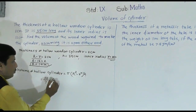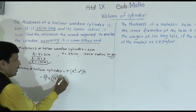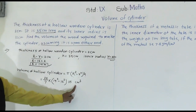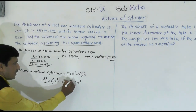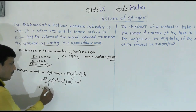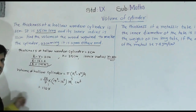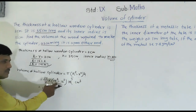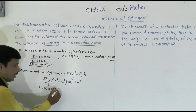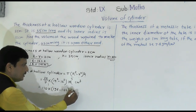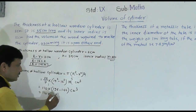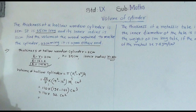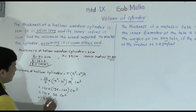Volume equals (22/7) × (14² − 12²) × 35 cubic centimeters. We simplify: 7 goes into 35 five times, giving 22 × 5 = 110. Using the difference of squares: 14² − 12² = (14+12)(14−12) = 26 × 2 = 52. So volume equals 110 × 52 = 5720 cubic centimeters.